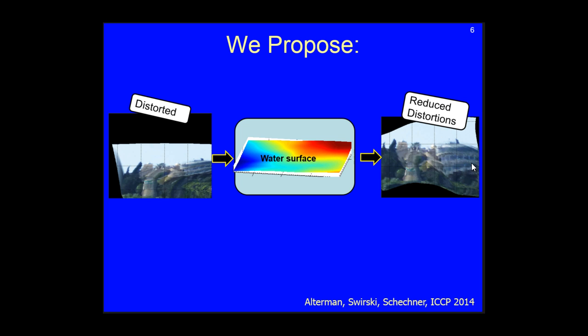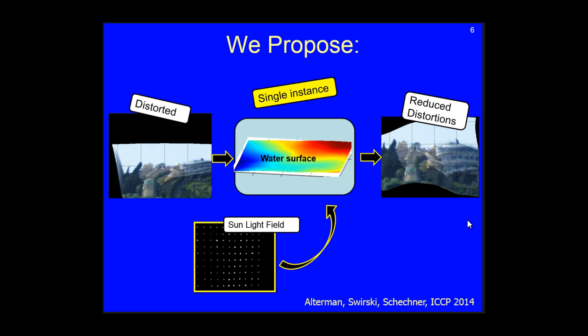So, we propose a novel virtual periscope system. The input is a distorted image. The output is an image with reduced distortions. All this in a single instance using an estimation of the water surface. An additional input to our system is the sunlight field, which I will soon explain about.